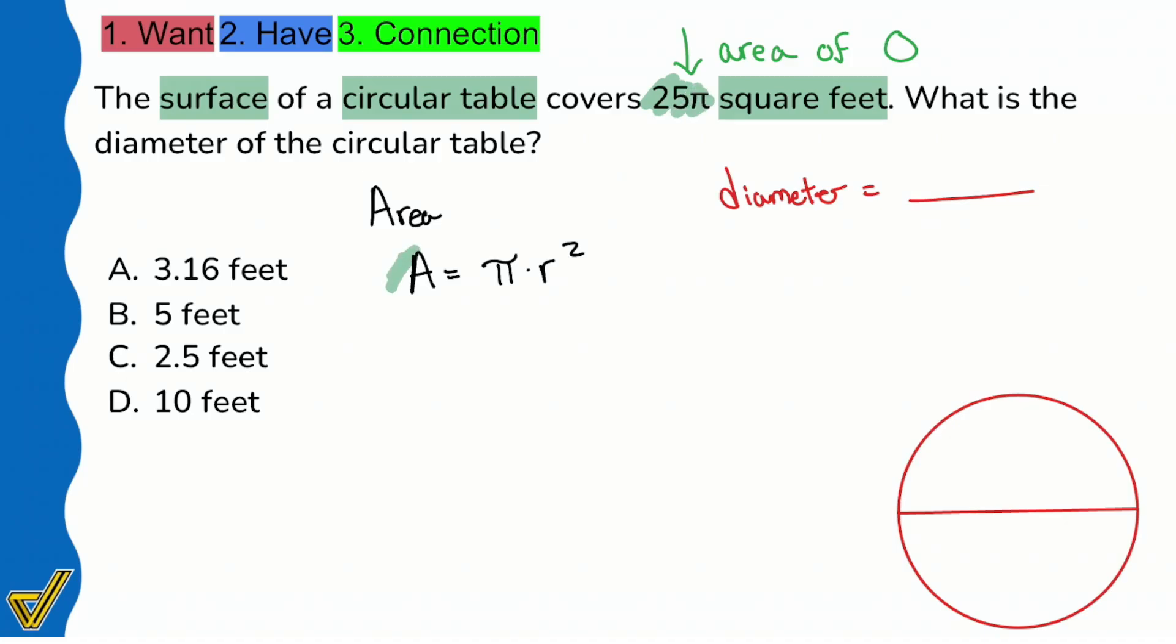We can take the 25π and plug it in, but the one thing that we have to be very careful of is that when you solve this, guess what you're going to be solving for? r. r means radius. We're looking for the diameter. That's really the big thing here, my party people, understanding if you're looking for the correct thing.